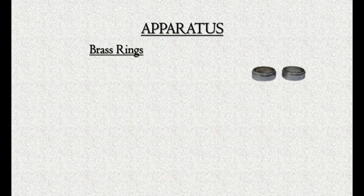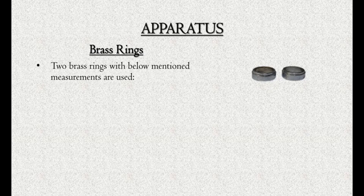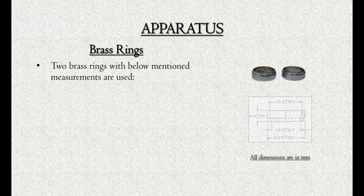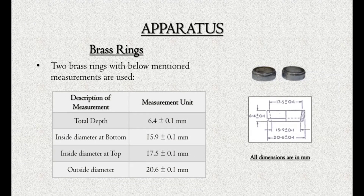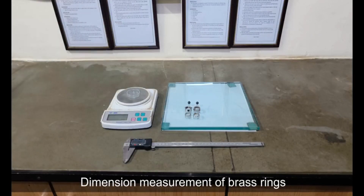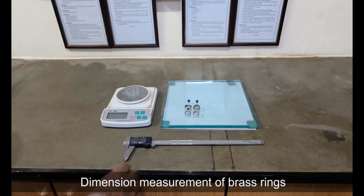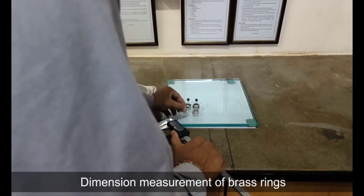Brass rings: two brass rings with the following measurements are used — total depth, inside diameter at bottom, inside diameter at top, and outside diameter. Check the dimension measurements of the brass ring.